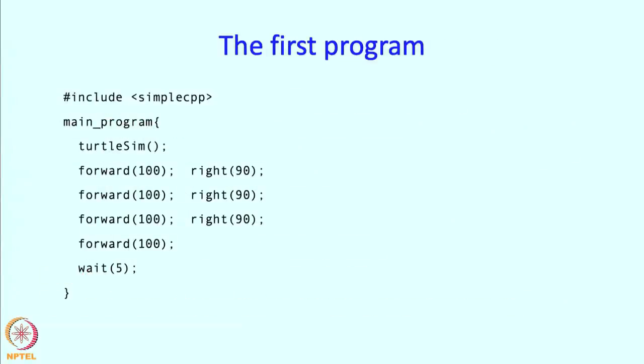Alright, so here is the first program. So I have shown it over here, I am going to explain it one statement at a time. So the first statement, include SimpleCPP in those funny looking brackets, simply says, simply tells the computer look I am going to use the SimpleCPP facilities. Then the main_program is a keyword which says that look what follows is the main program. So starting from the open brace all the way till the closed brace at the bottom of the page.